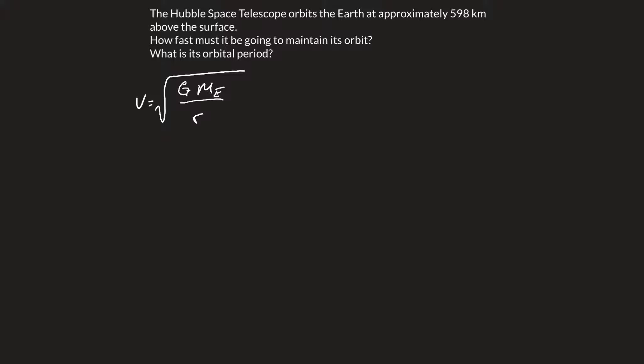In this case, we know the mass of the Earth, about 5.98 times 10 to the 24 kilograms. We know the radius of the Earth, 6.38 times 10 to the 6 meters. And we know the distance from the surface of the Earth to the satellite, 598 kilometers.